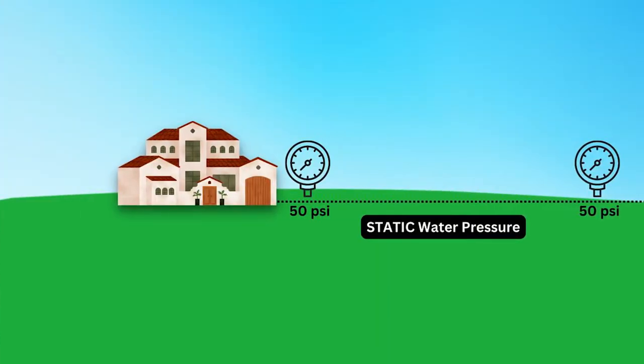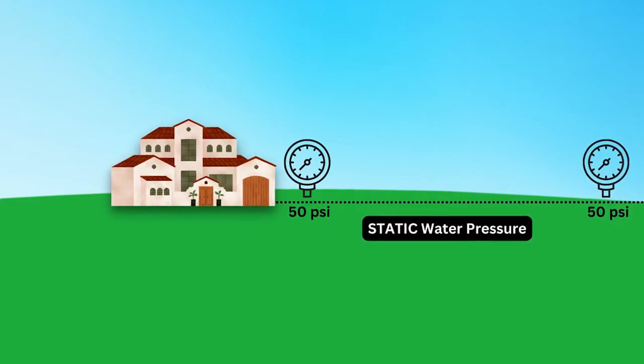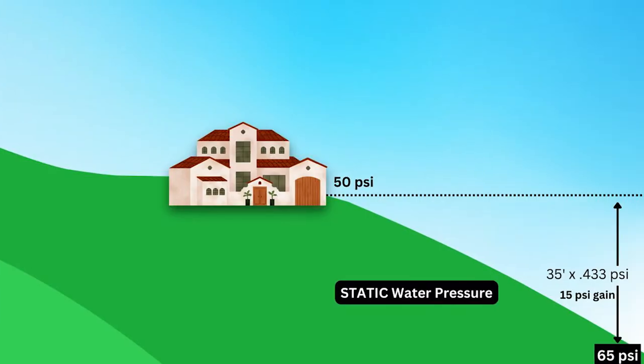Static water pressure is the pressure when the water is motionless. In a level piping system, static water pressure is the same everywhere — it is the same at the beginning of the system and at the end of the system. The only difference in pressure is going to be elevation. Water at the top of a hill will be at a lower pressure than water at the bottom of the hill because the force of gravity on the water is what changes static pressure.